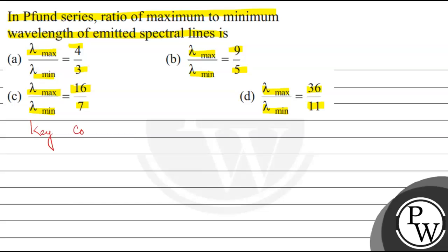Key concept: The formula we'll use is for Pfund series, one upon lambda equals R times one upon five squared minus one upon n squared.